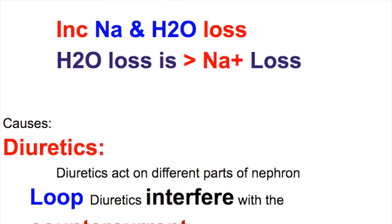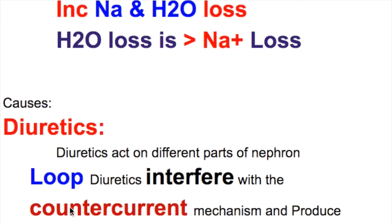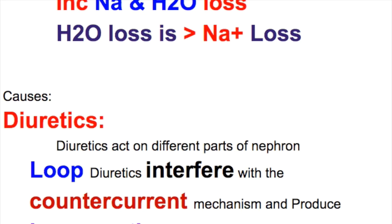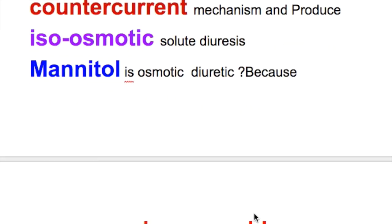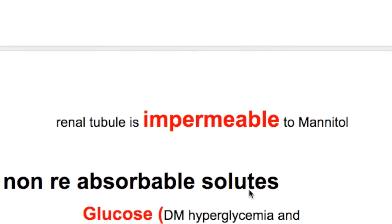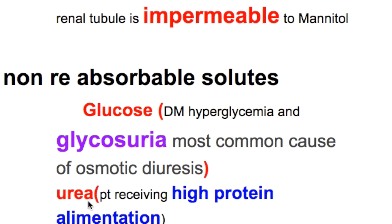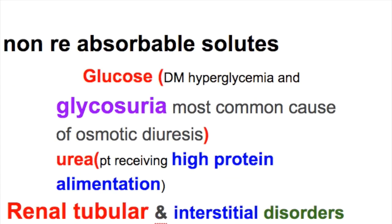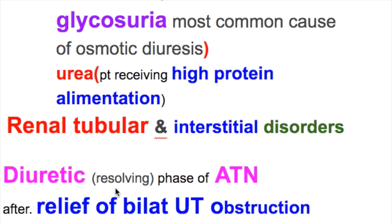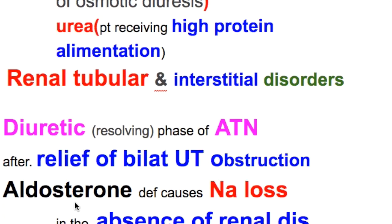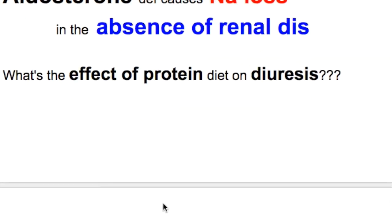The causes of osmotic diuresis: First, diuretics act on different parts of the nephron. Loop diuretics interfere with the countercurrent mechanism producing isosmotic solute diuresis. Mannitol causes osmotic diuresis because the renal tubule is impermeable to mannitol. Glucose in uncontrolled diabetes — glycosuria — is the most common cause. Urea causes osmotic diuresis in patients receiving high protein alimentation. Renal tubular interstitial disorders, resolving phase of acute tubular necrosis, and relief of bilateral urinary tract obstruction also cause osmotic diuresis. Aldosterone deficiency causes sodium loss, and protein meals cause osmotic diuresis.